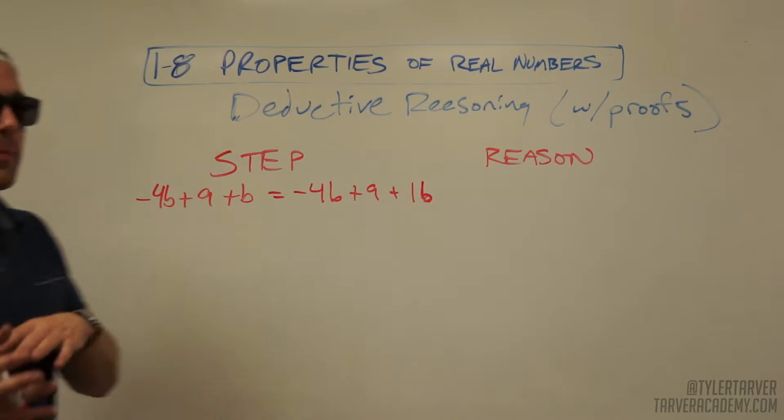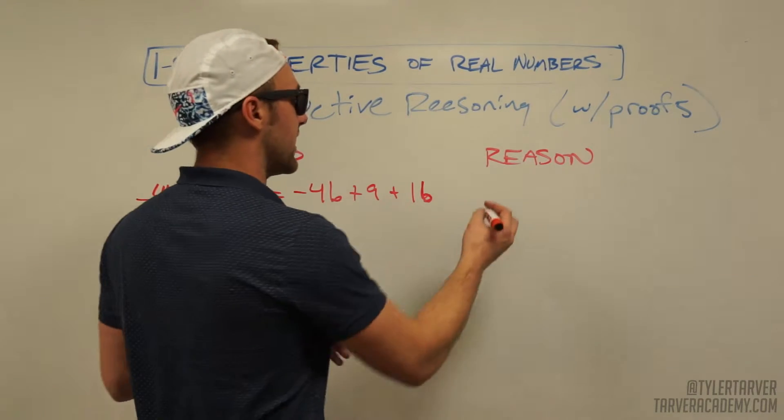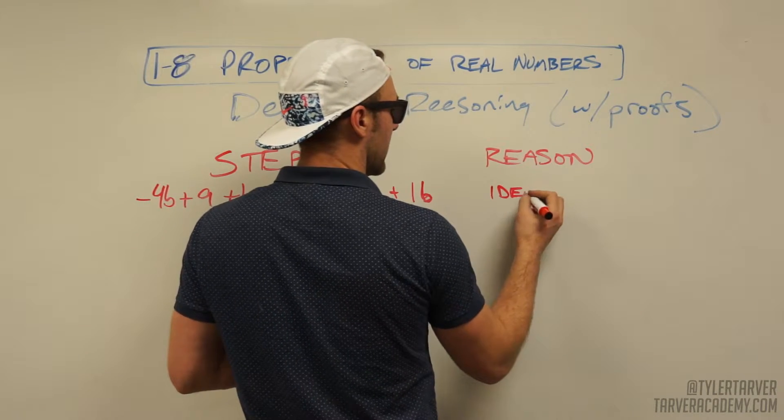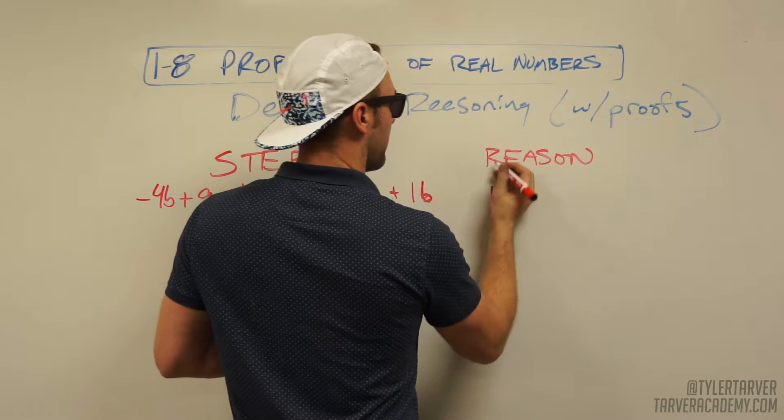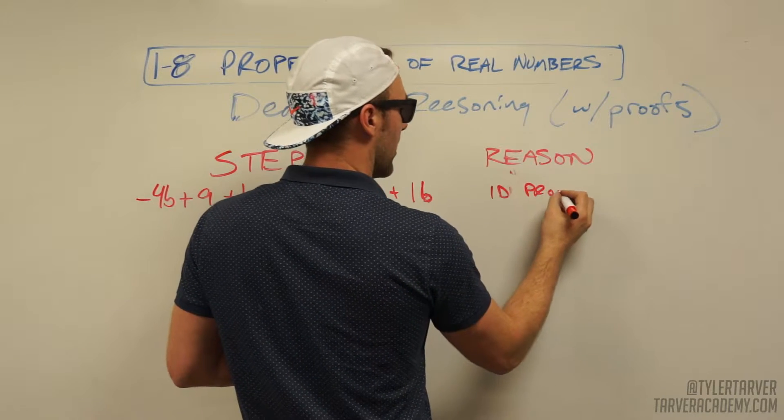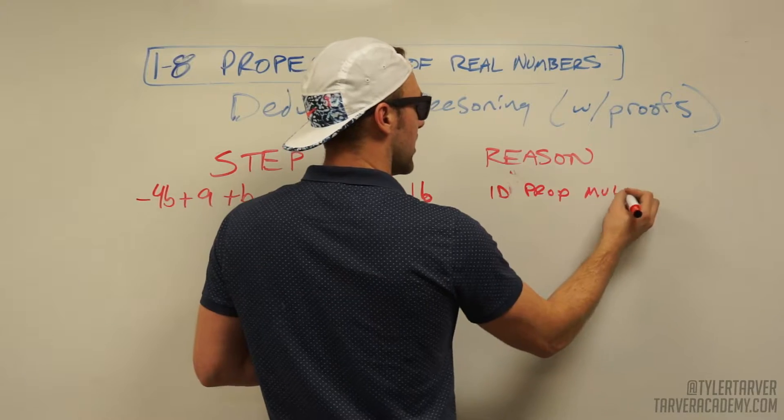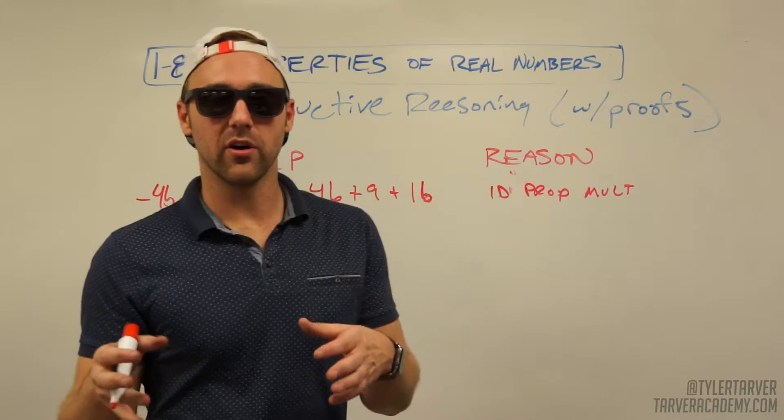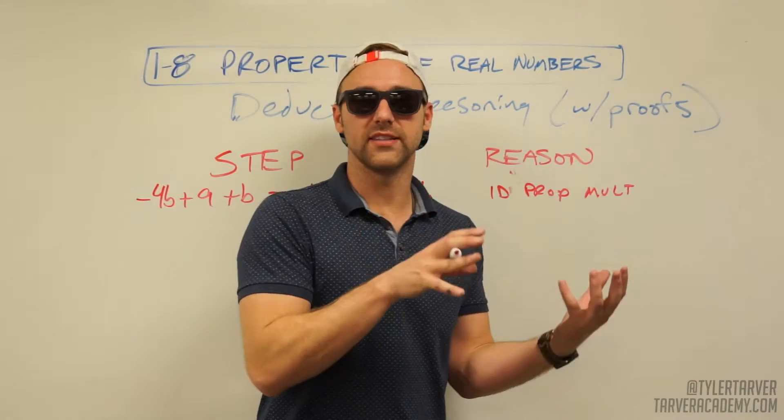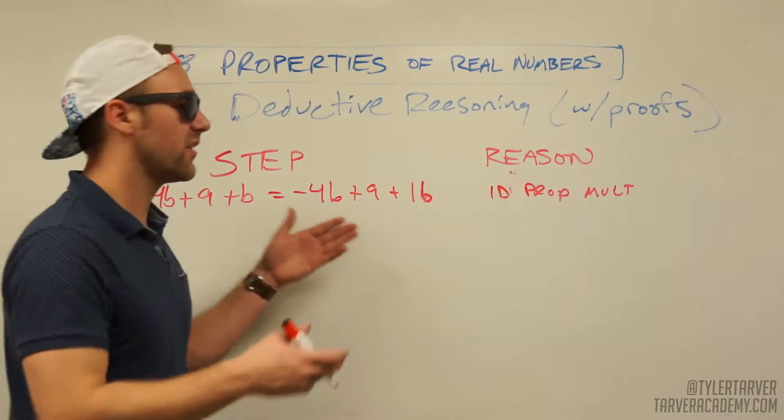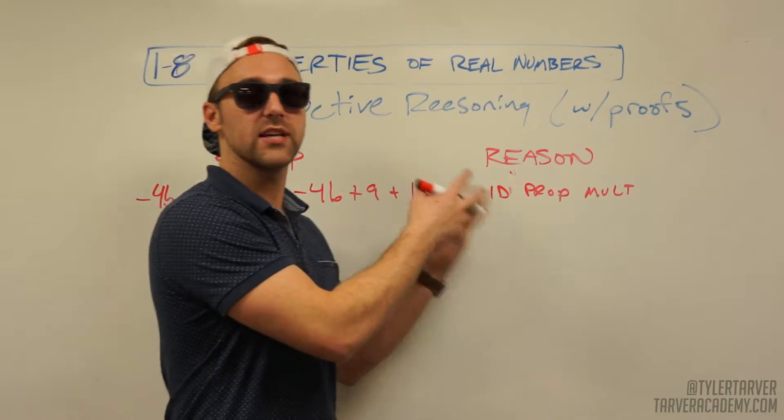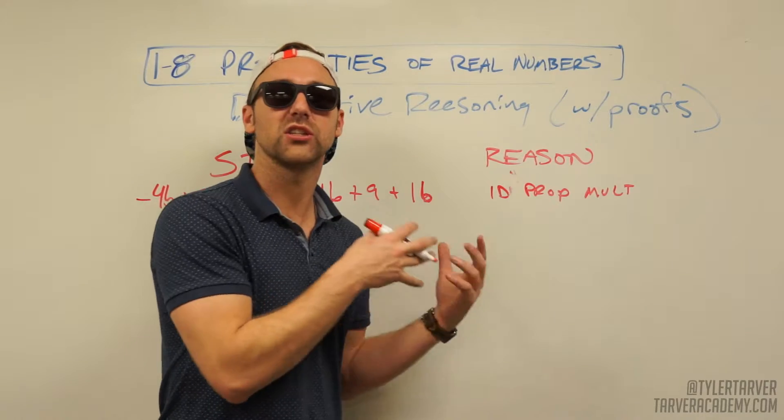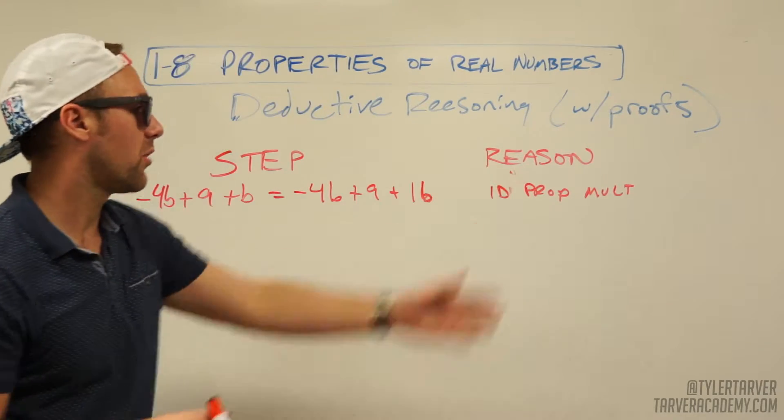Now the property that we utilize for that is the identity property of multiplication, which is anything times 1 is itself. So I can put a 1 in front of it, I can multiply 1 times it and it still would be itself. I'm not changing the problem because of that property.